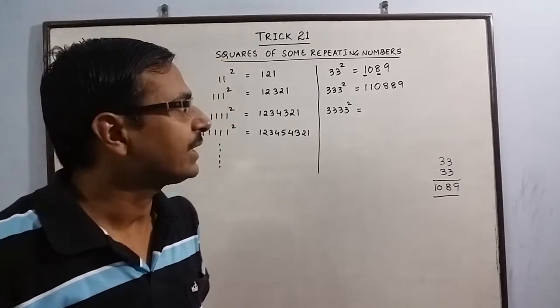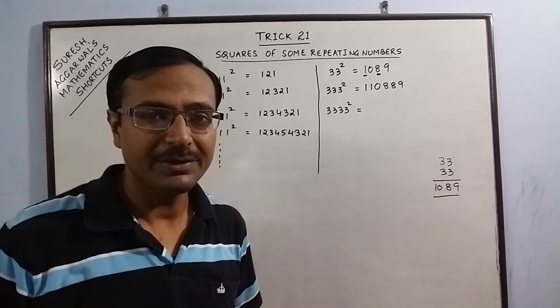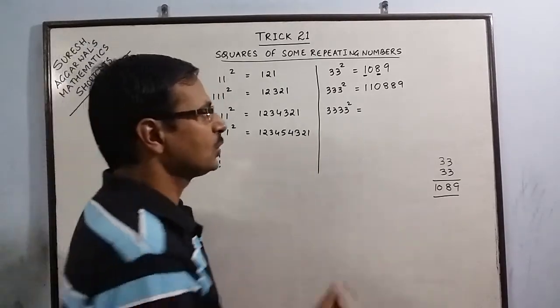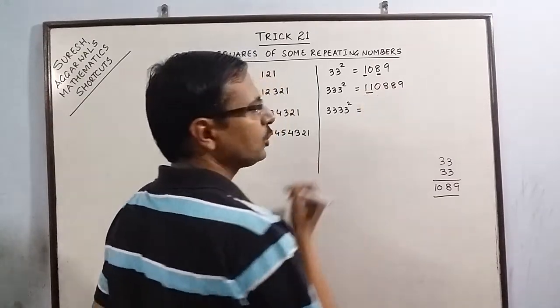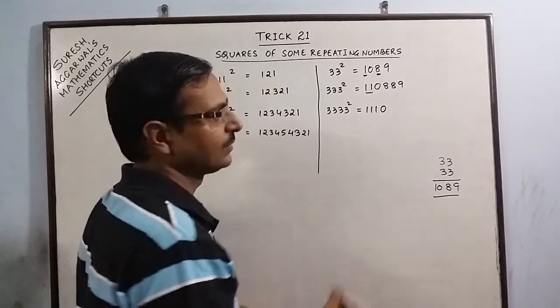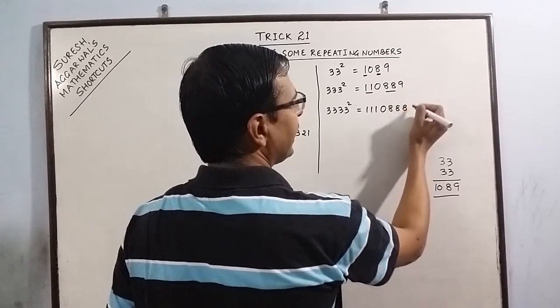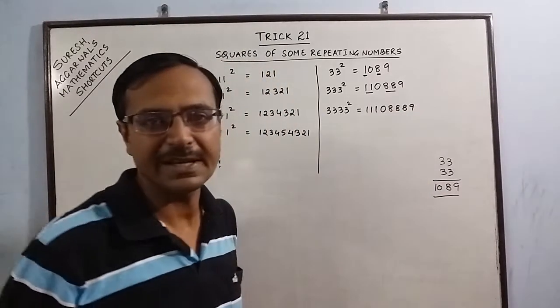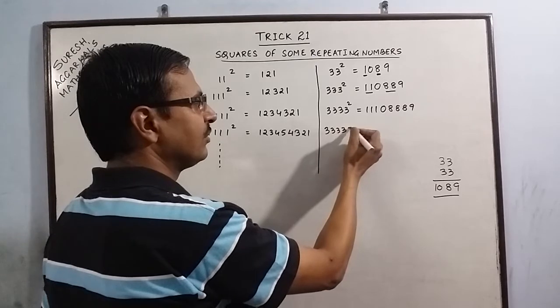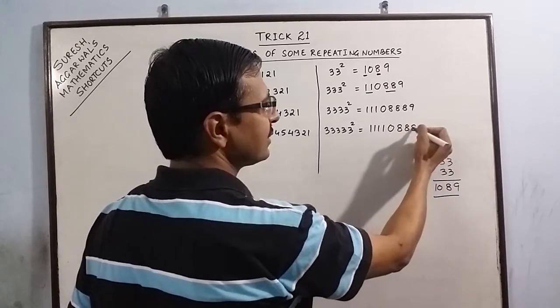333 square is 110,889. Now the pattern can be repeated for any number of 3s. Here we have 4 threes. So here we had 2 ones, now we will have 3 ones. Zero will retain its place. We have 2 eights, here we will have 3 eights, and 9 will retain its place as it is. This pattern can now be repeated for 5 threes: we will have 4 ones, 1 zero, 4 eights, and 1 nine.